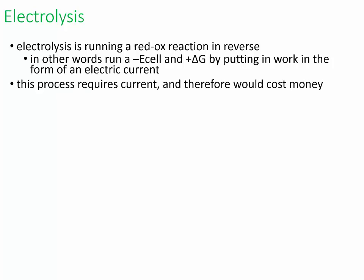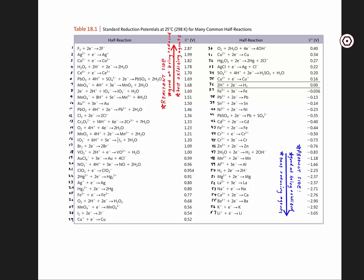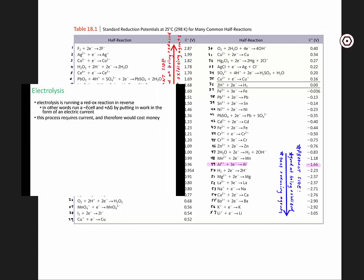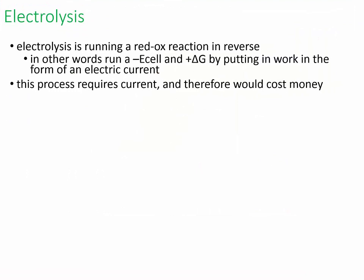These are usually cost-intensive processes. For example, to produce aluminum it takes a lot of current. If you look at aluminum on the table, it's number 49, which is really low, meaning it really doesn't like to be reduced. So producing aluminum to solid form is going to take a lot of current and it costs a lot to do that.